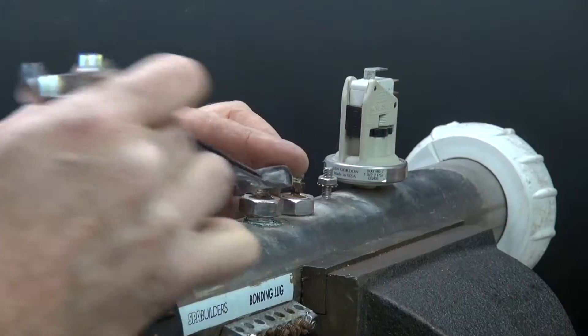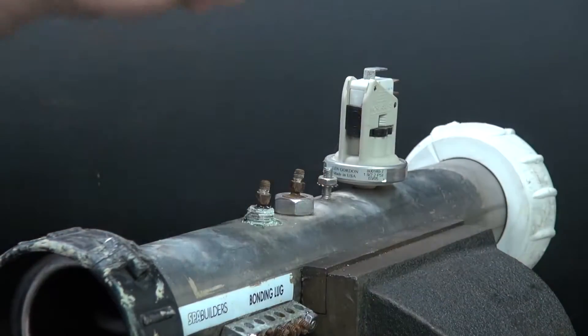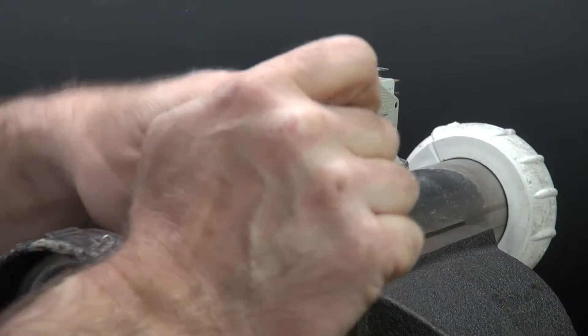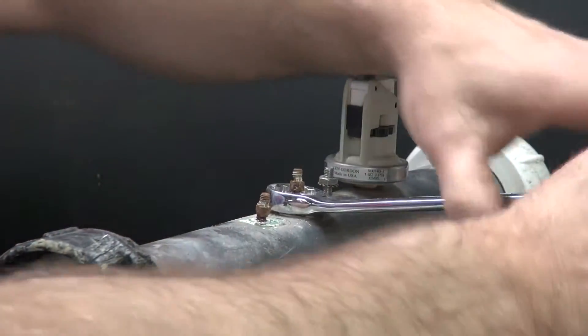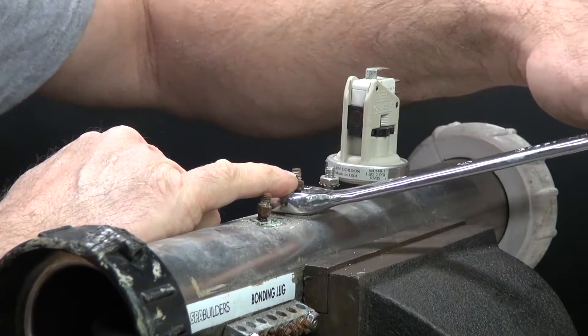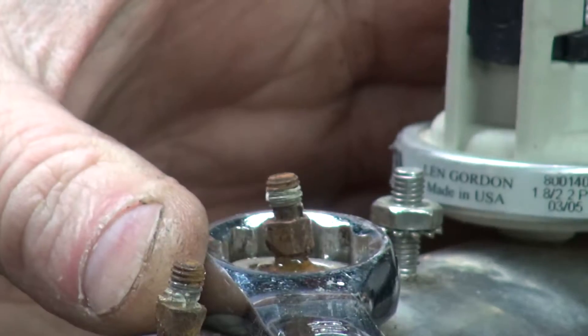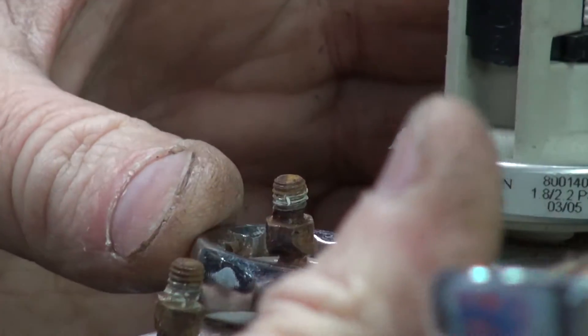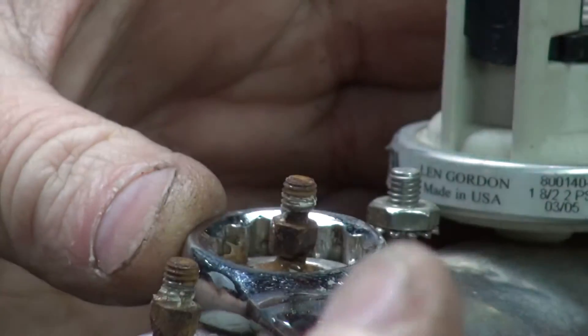So all I did was just put it in a vise to hold it. So that one actually came off. You can see this one, if you see, that is turning - this part is turning with the nut. When you see that part turning when you turn the nut, that is a problem. That means that the epoxy is broken on the back and the whole thing is spinning.